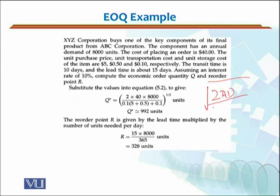Substitute the values into the equation: Q = square root of (2 × A × D) over (i × (C + T) + t). This gives us Q* = 992 units. Now, I will not go into the depth if the units are not discrete in nature.